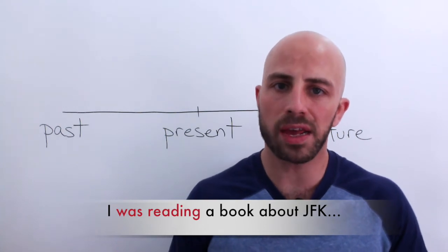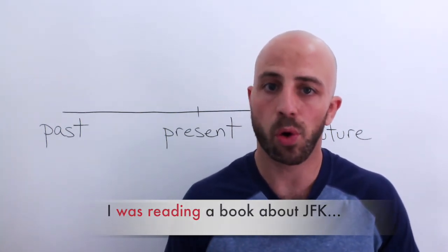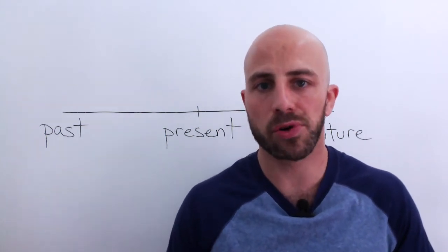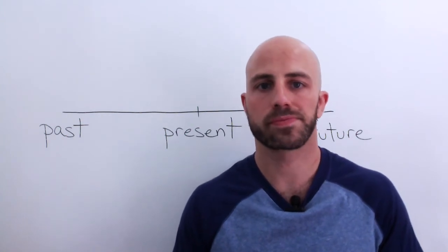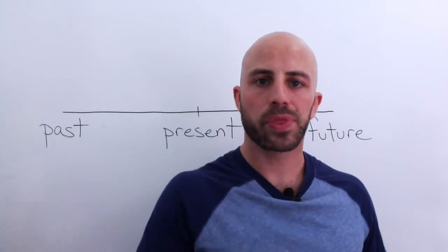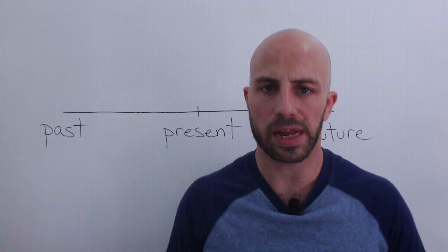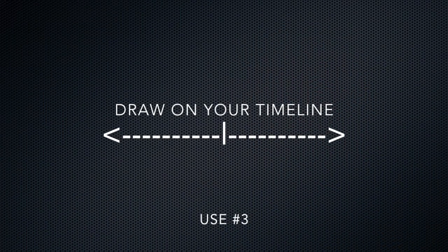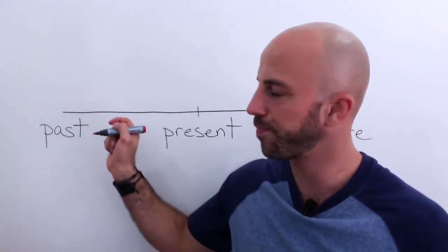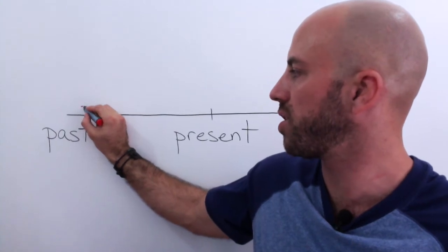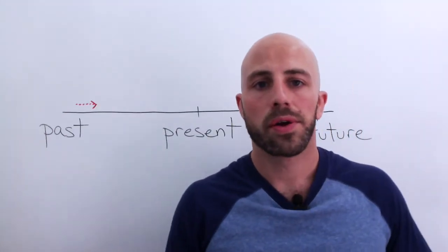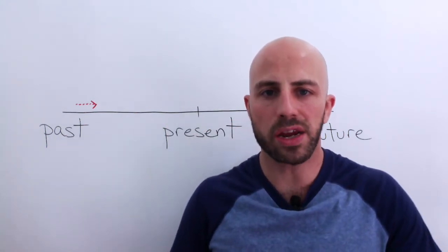'I was reading a book about JFK' means you're probably not finished with your story or not finished the book. For example: 'I was reading a book about JFK and his life is really interesting,' or 'I was reading a book about JFK but I'm not finished yet.' Pause the video and show on the timeline what this picture would look like, then write your own examples.